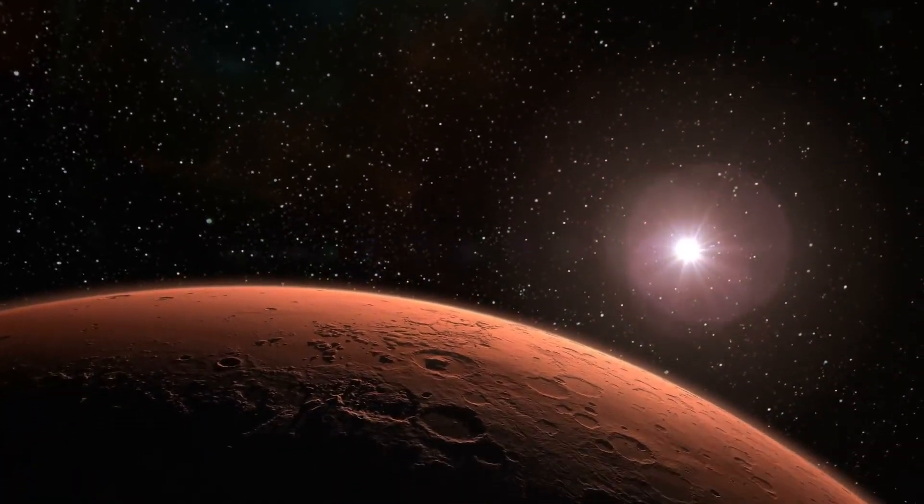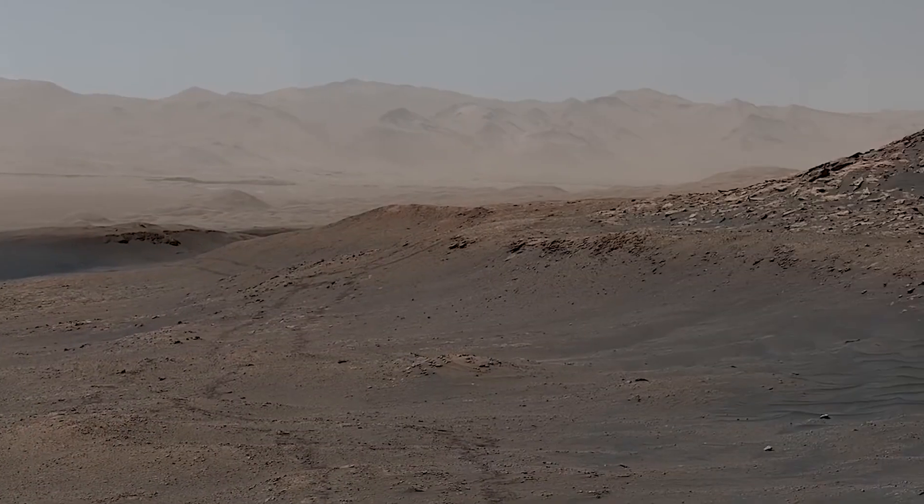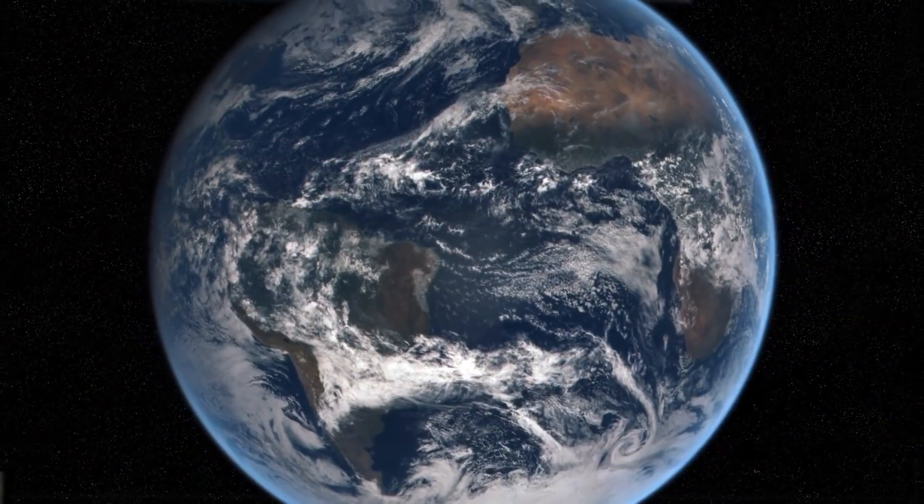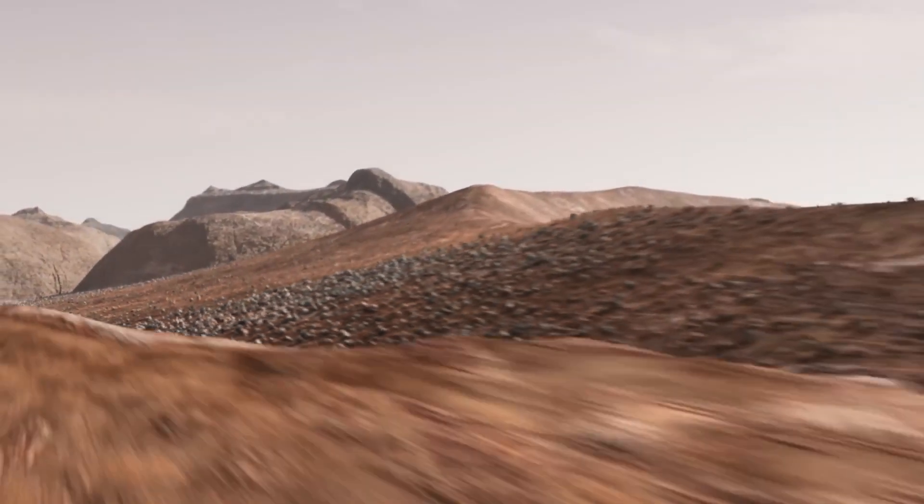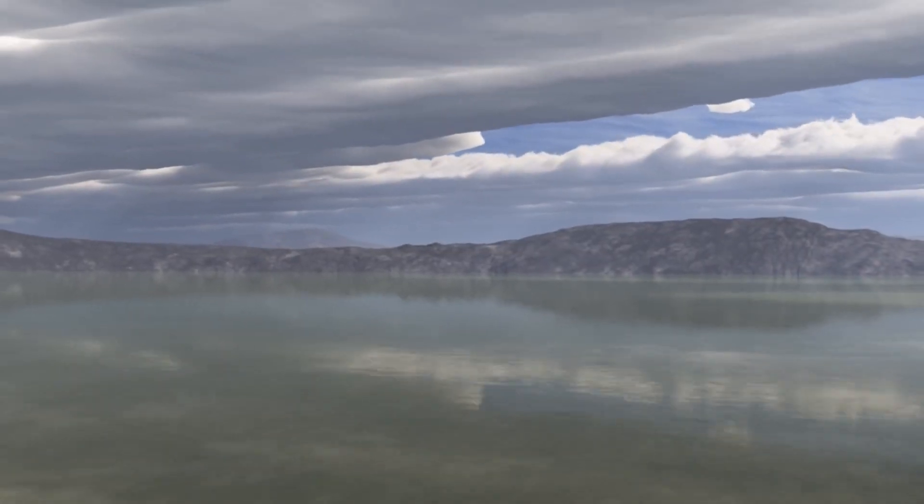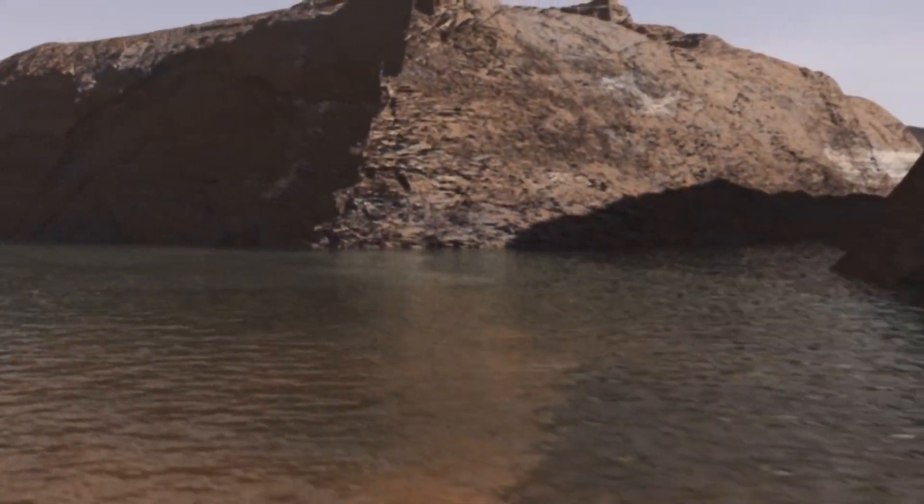While today, when we look at Mars, we see a very dry planet as compared to the Earth, our blue marble. We see evidence of past lakes and streams. It may have even had a shallow northern ocean.